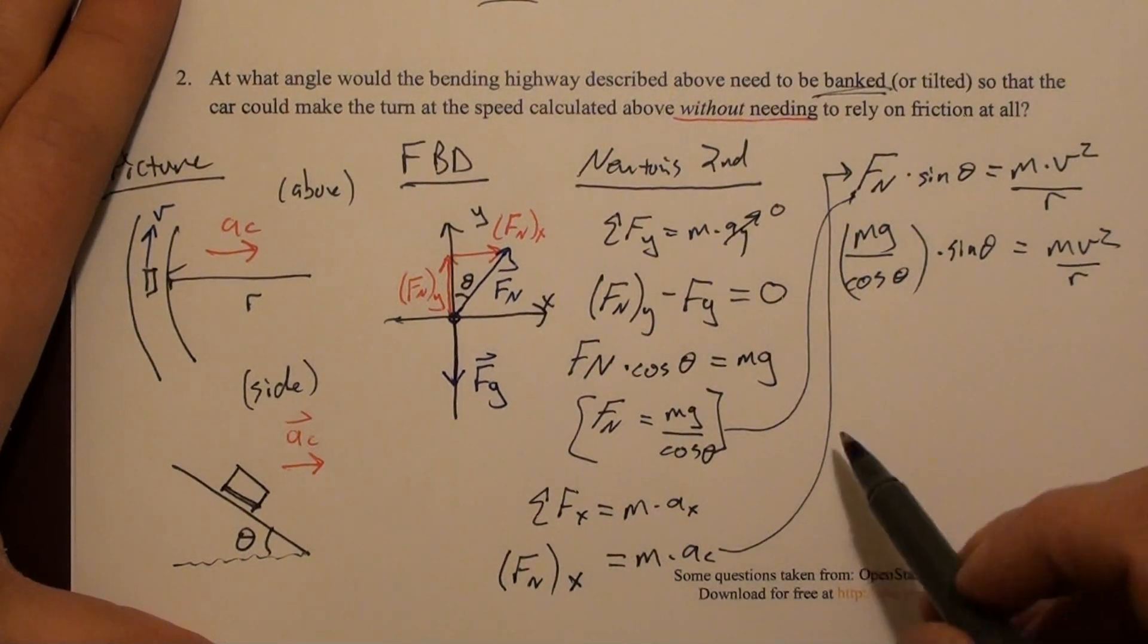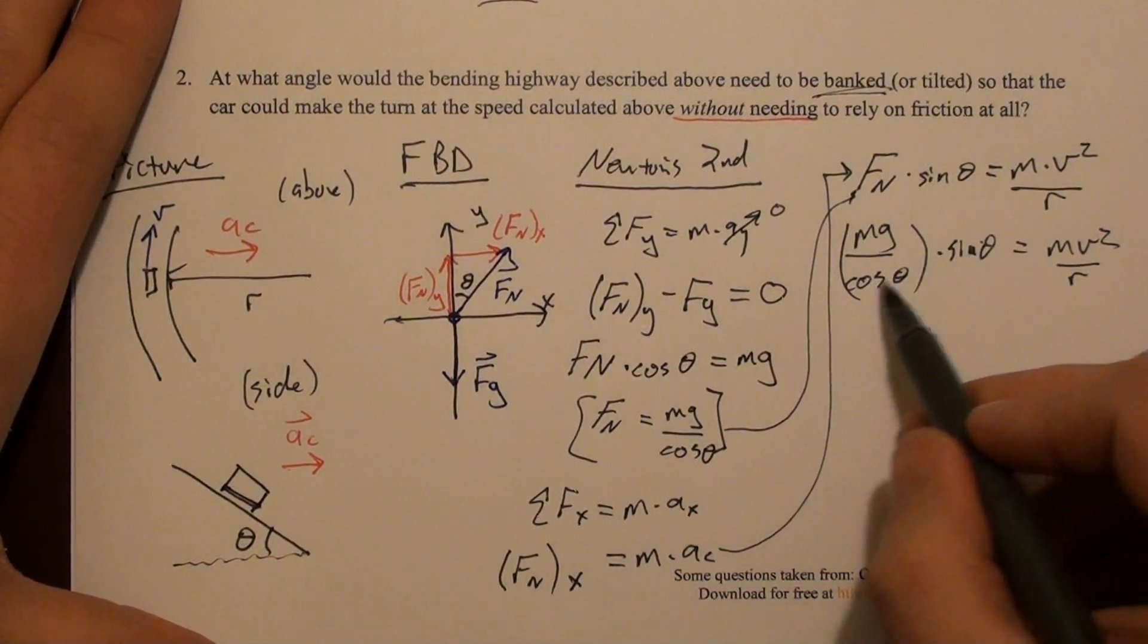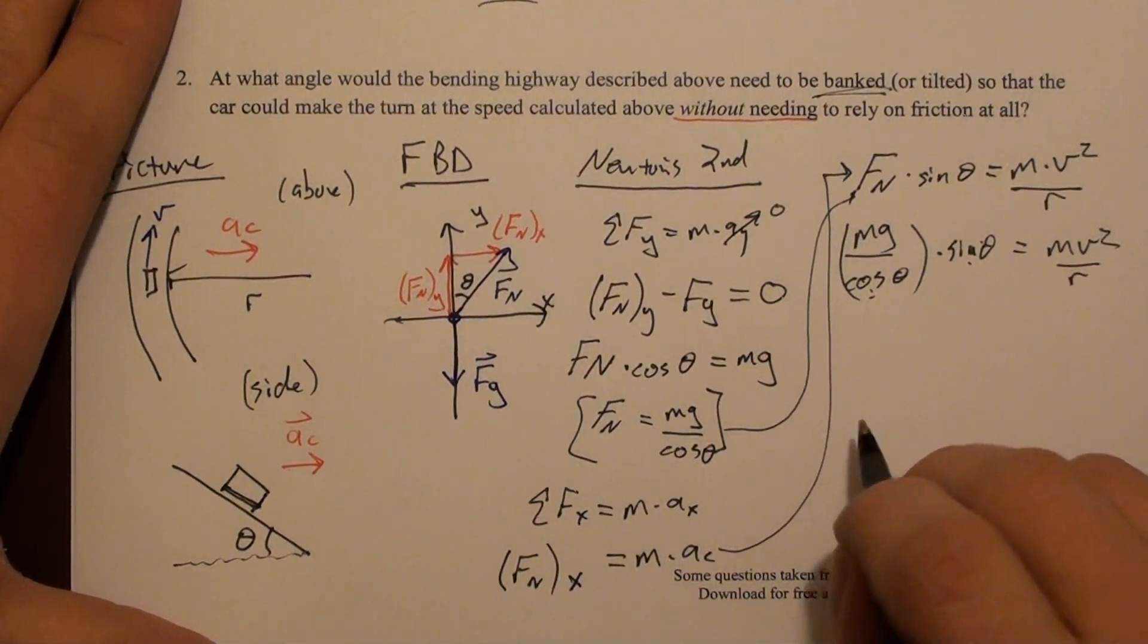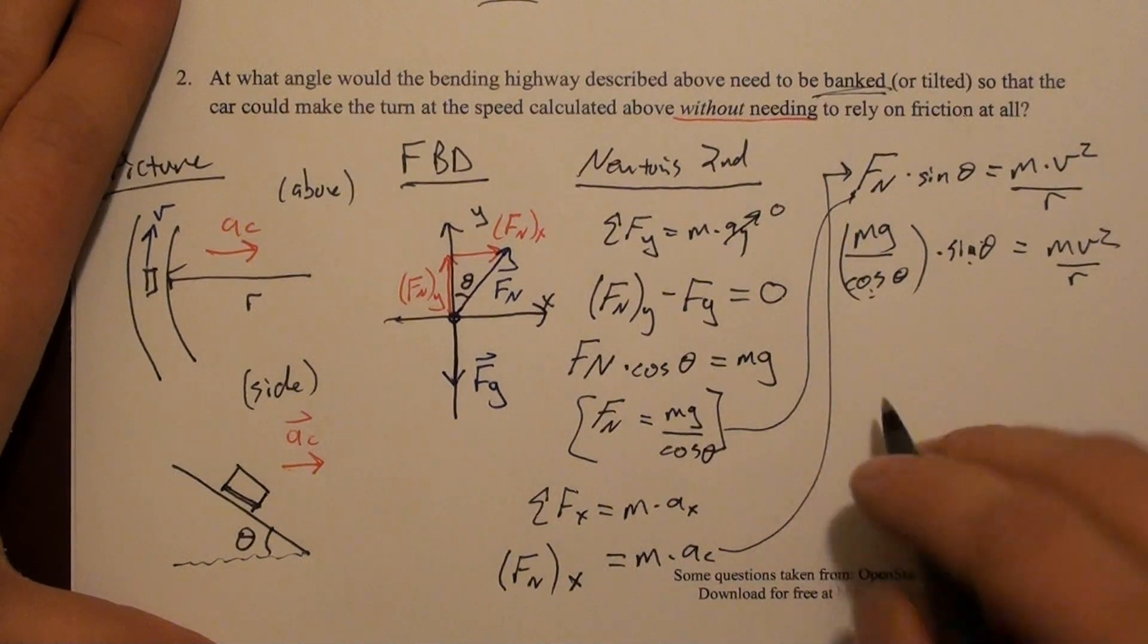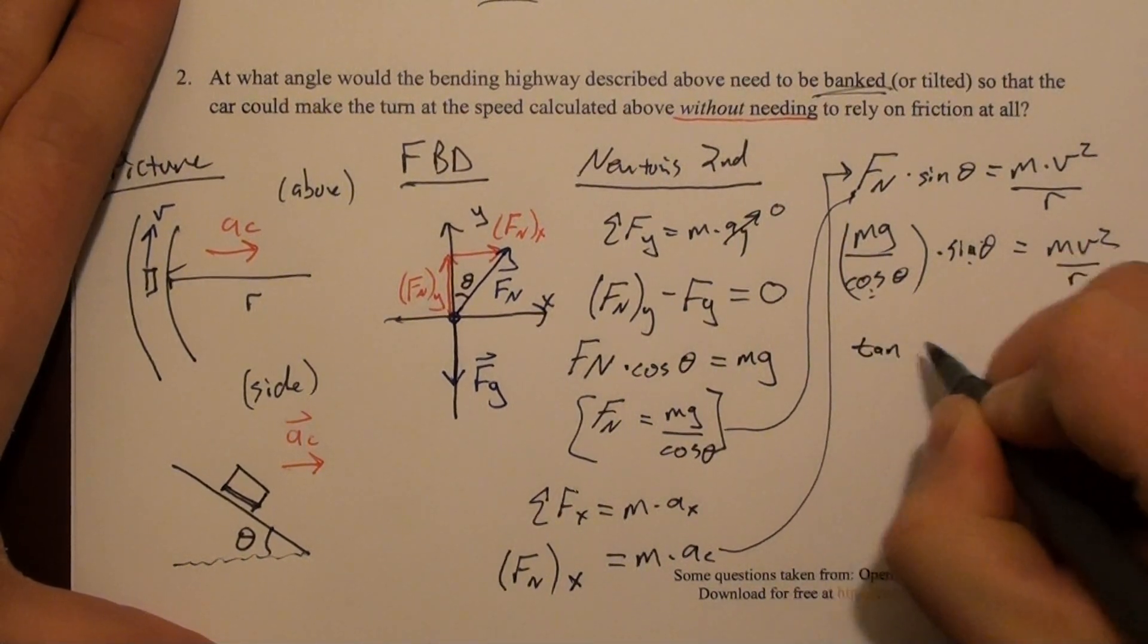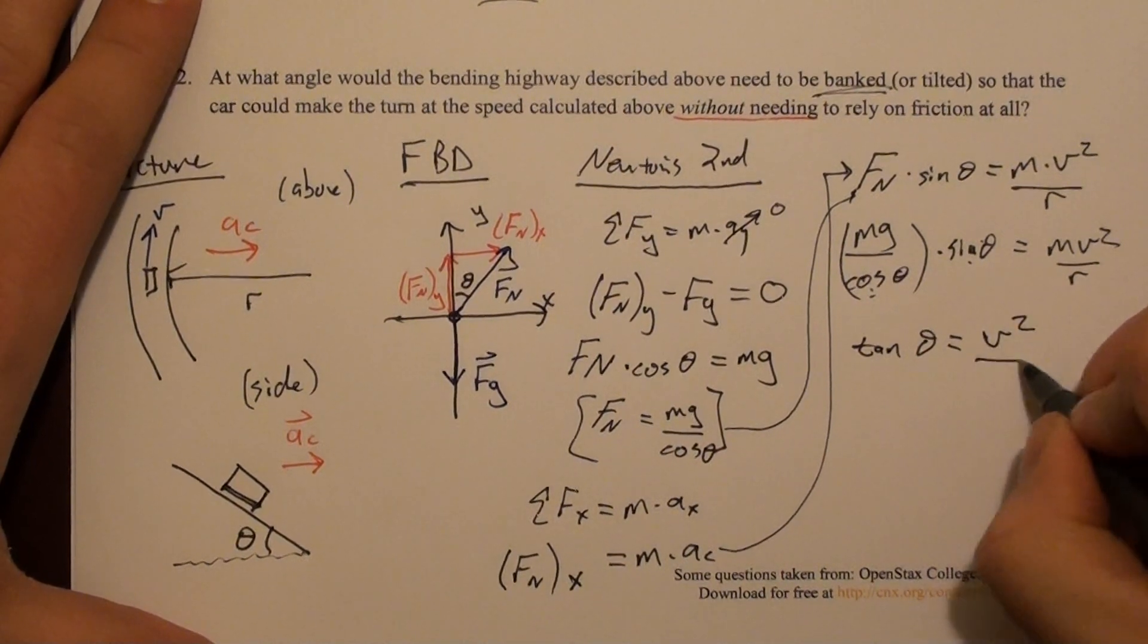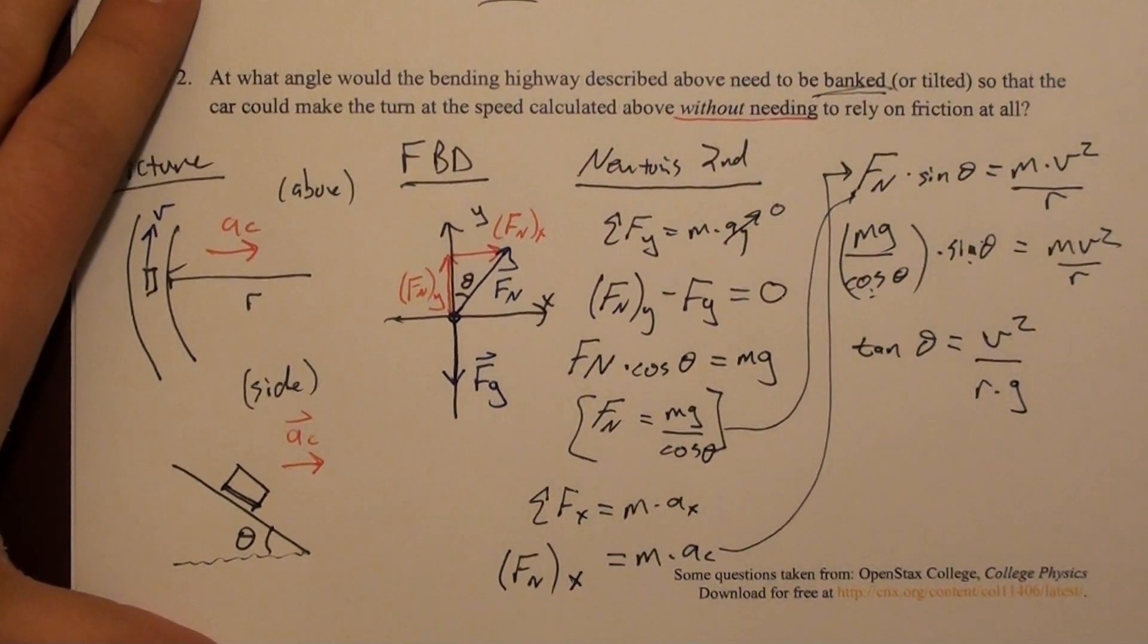Remember what I'm solving for here is the angle. At what angle should this highway be bent? So it would be nice if I only had one θ here instead of two. If I combine those two and divide mg to the other side, what I get is that tangent of θ is v² over rg. Notice the masses cancel out again, which is convenient.